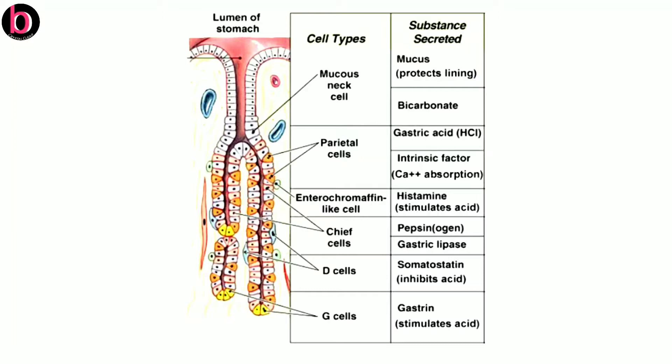The next cell type is enterochromaffin cells, also known as argentaffin cells. These are responsible for secretion of serotonin as well as histamine. Serotonin is a vasoconstrictor that causes constriction of stomach muscles, while histamine is a vasodilator that causes dilation of stomach muscles. Both serotonin and histamine are responsible for regulation of muscular movement of the stomach.